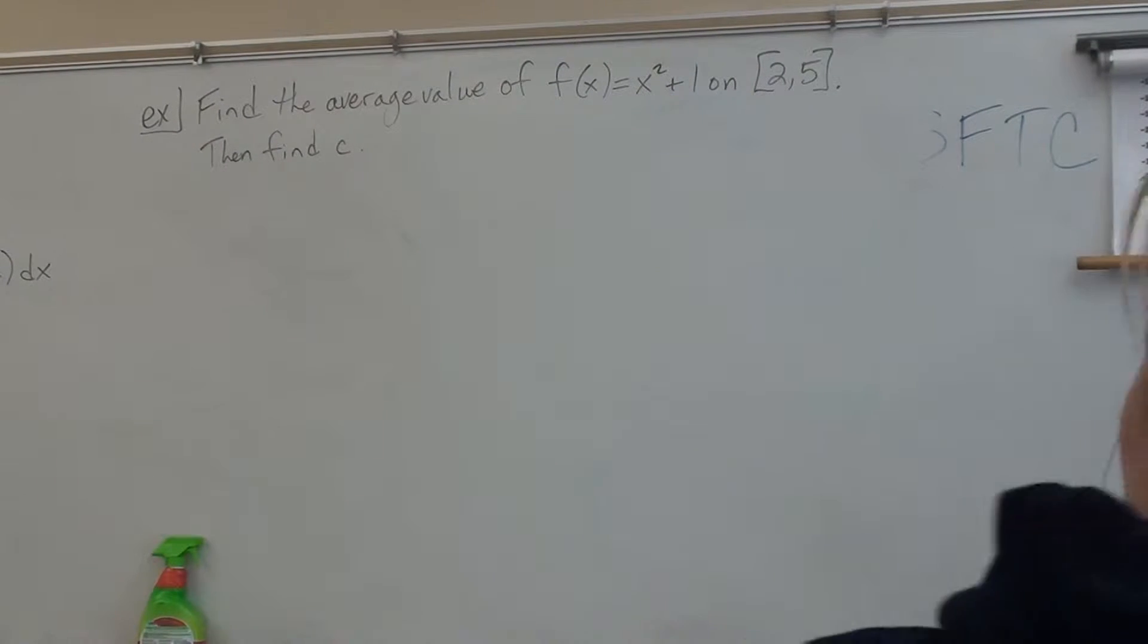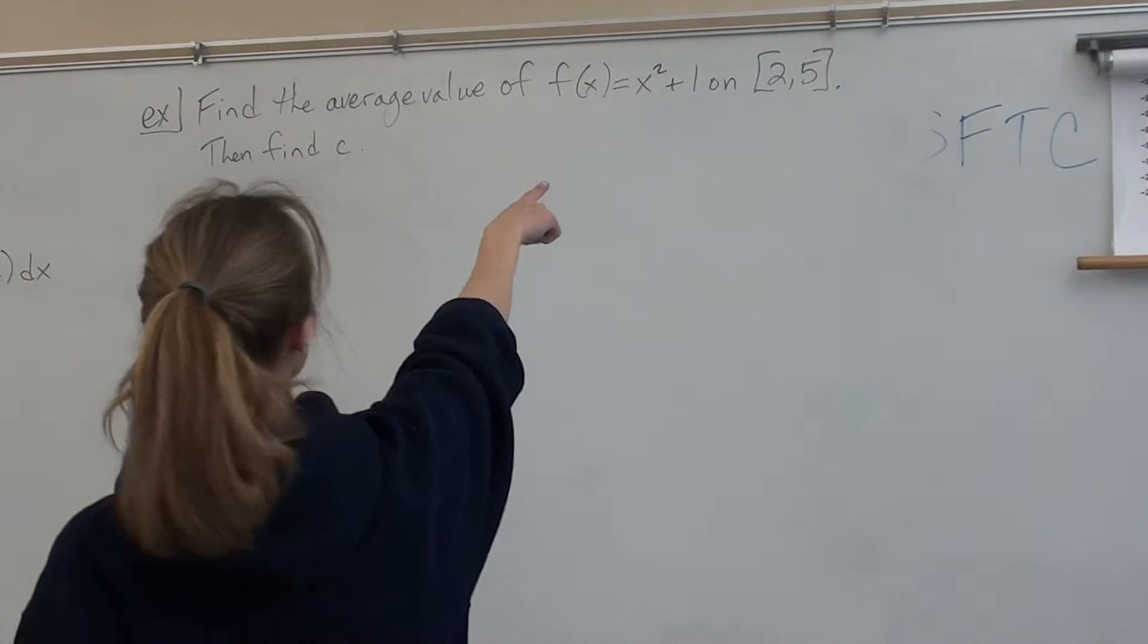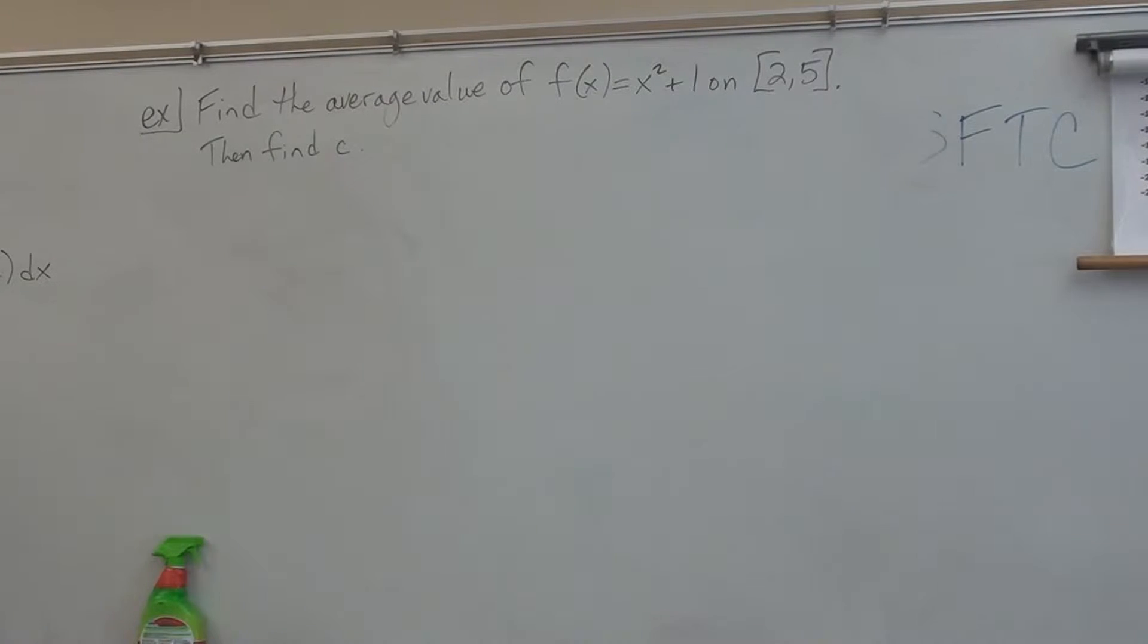So we're going to find the average value of f of x equals x squared plus 1 on the interval from 2 to 5. And then I'm going to walk you through how to find c. This function, this is whatever you want the average value of. If I wanted the average velocity, this is where the velocity would go. If I wanted an average number of ping pong balls, then the number of ping pong balls function would go right here.